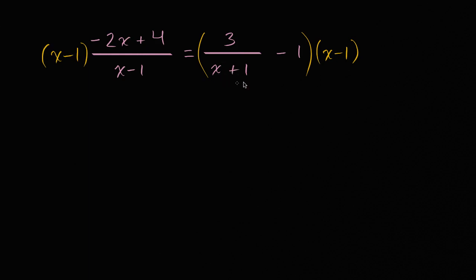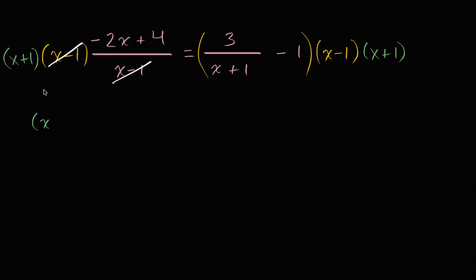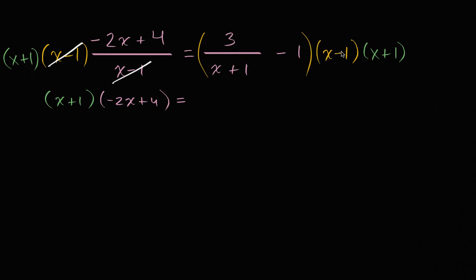Then, to get rid of this x plus one in the denominator over here, we can multiply both sides of the equation times x plus one as well. On the left-hand side, x minus one divided by x minus one is just going to be one for the x's where that's defined — for x not equal to one. So we're going to have x plus one times negative two x plus four, which gives us x plus one times negative two x plus four. On the right-hand side, multiplying by both x minus one and x plus one, the x plus one cancels with the denominator, leaving us with three times x minus one, which is three x minus three.